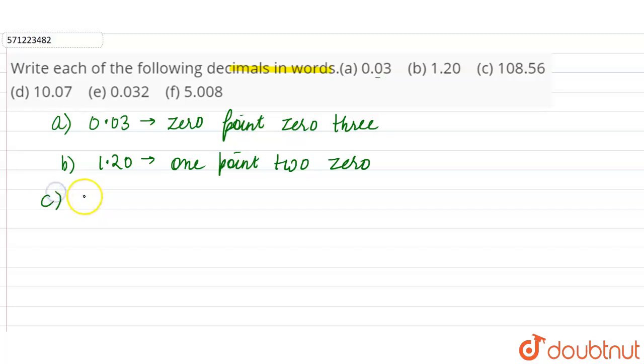Similarly, C part is 108.56. So this is equal to 108, one hundred eight point five six. Zero point five six, and not forty, and not fifty-six.